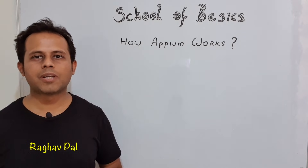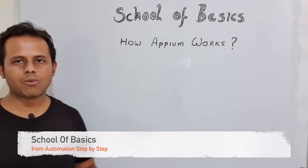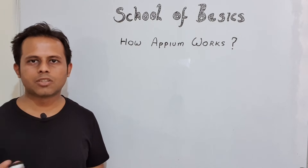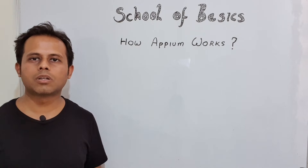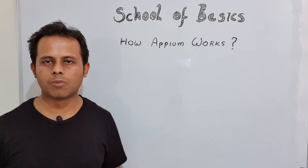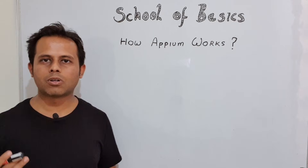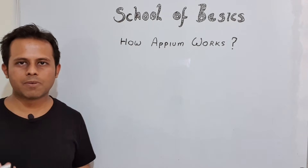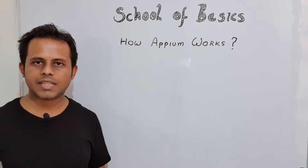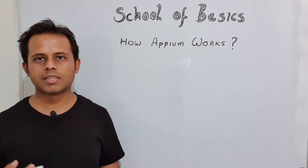Hello and welcome, I'm Raghav and welcome to School of Basics. Today I'm going to cover the topic of how Appium works. Appium is an open source platform used for automation on mobile platforms like Android, iOS, and also on Windows desktop. You might get this question in interviews or want to understand it in general. By the end of this video you will know exactly how Appium works and be able to confidently explain it to anyone.